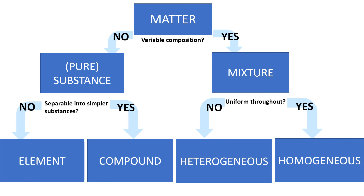Now let's summarize. An element is a substance which cannot be separated into simpler substances. Elements are composed of extremely small particles called atoms. All atoms of a given element are identical, and the atoms of one element are different from the atoms of all other elements. A chemical compound is composed of atoms of more than one element, and the relative number of atoms of each element in a given compound is always the same. Compounds differ from mixtures in that the substances producing them lose their own characteristic properties, and the composition of a chemical compound never varies.